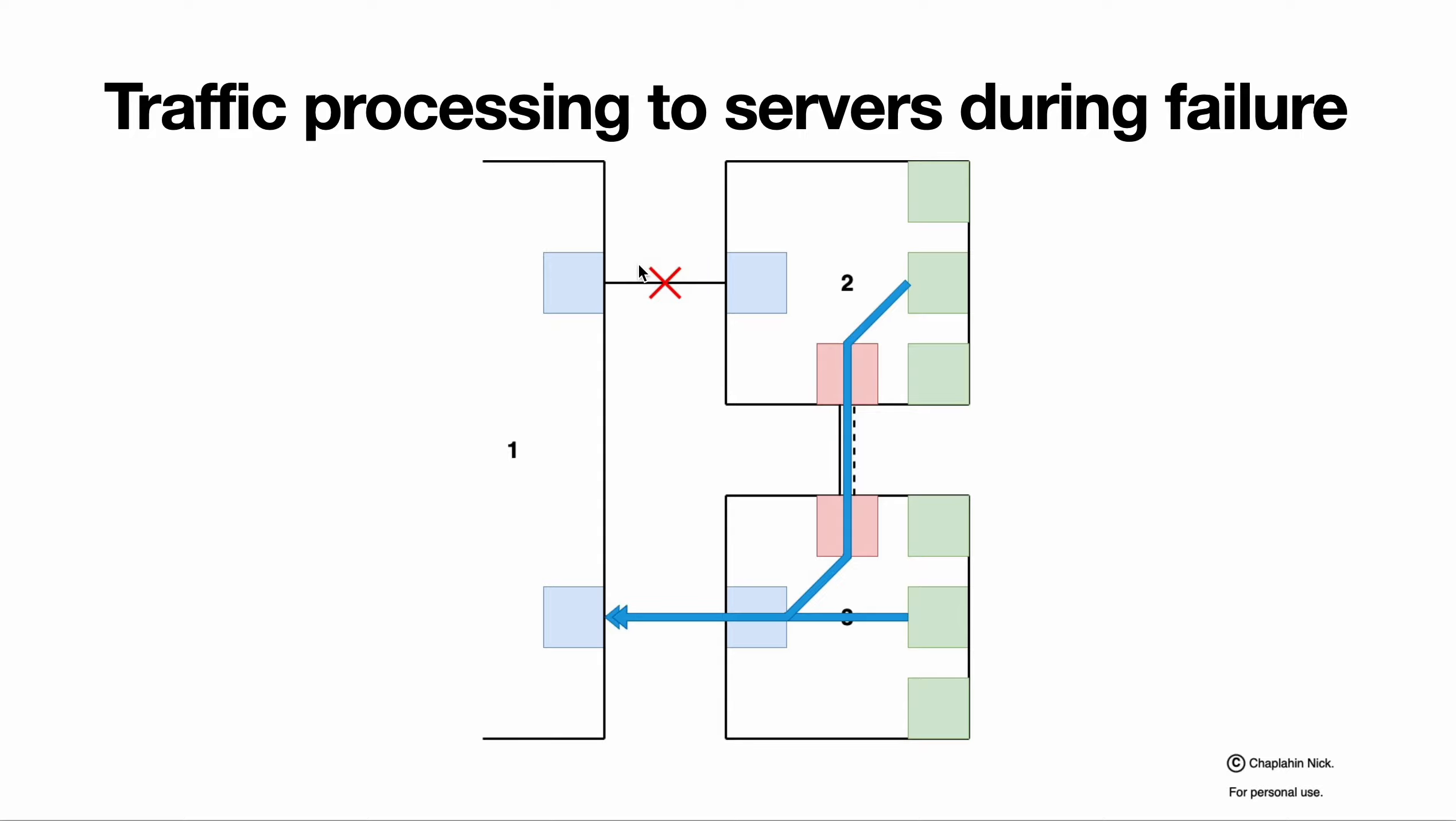When we have a problem or link goes down, port goes down, whatever, our control protocol detects that MLAG port is in trouble and it performs two general actions.